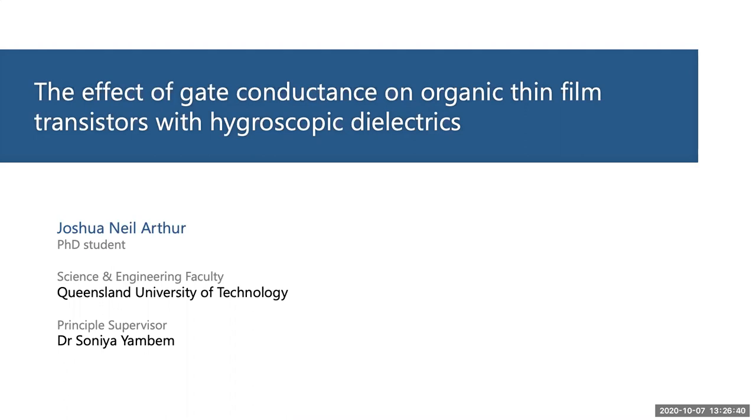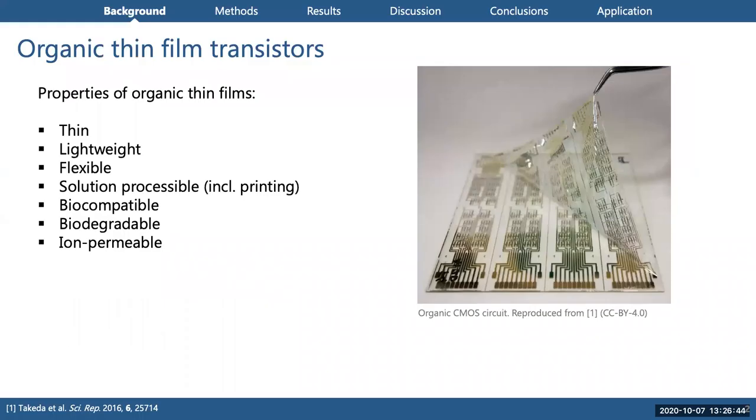In particular, we're dealing with a class of low voltage transistors that use a hygroscopic dielectric layer. Organic thin film transistors, or OTFTs, take advantage of the properties of organic thin films. They can be incredibly thin, lightweight, and flexible. They're often solution processable, so we can use different printing techniques. They can also be biocompatible, biodegradable, and ion permeable.